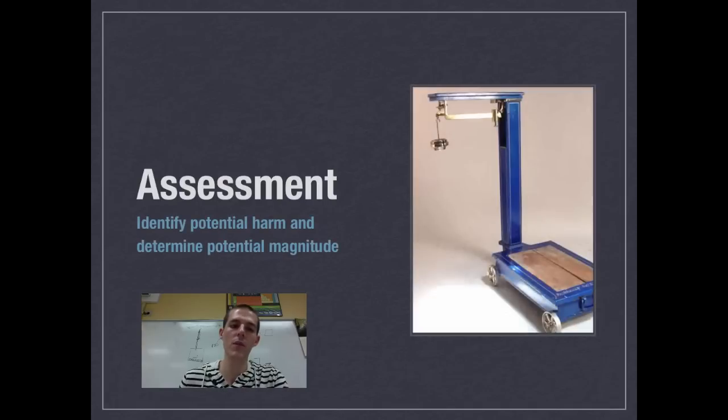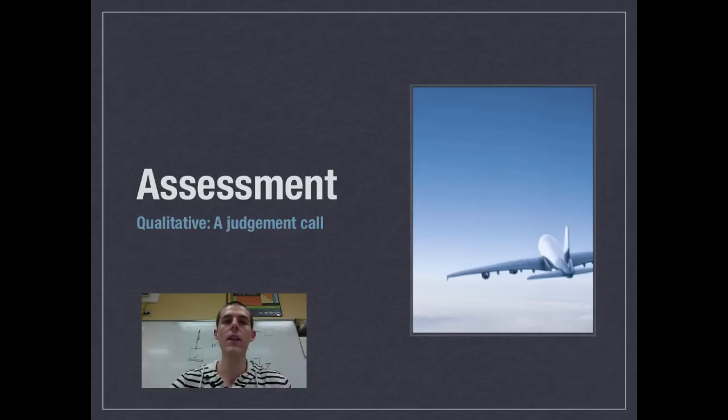The first step of the risk process would be assessment. And in the assessment phase, there's a couple things that happen. The first thing is you identify the potential harm, and then you determine the potential magnitude. So you define what is the thing that could potentially do damage, and you determine how much damage it could actually do. In doing this, there's two ways that the damage is assessed and measured. First one is qualitative, which is basically a judgment call.